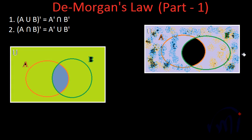This total area representing A complement union B complement is exactly the same as the area shaded in light green in the first diagram. So this is the proof for the second De Morgan's Law. In the next video we are going to learn the rest of De Morgan's Laws. Keep watching Math Smart — bye bye till then.